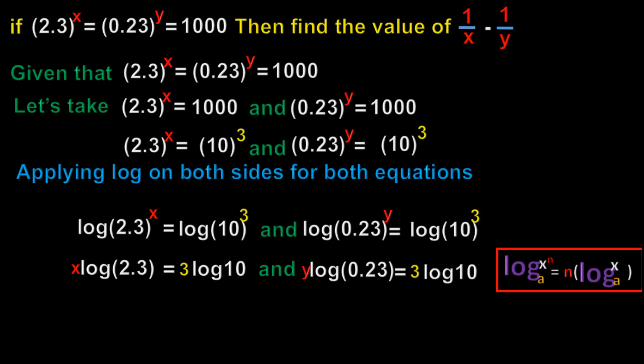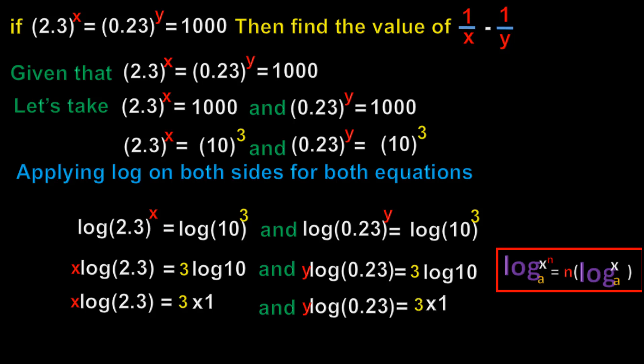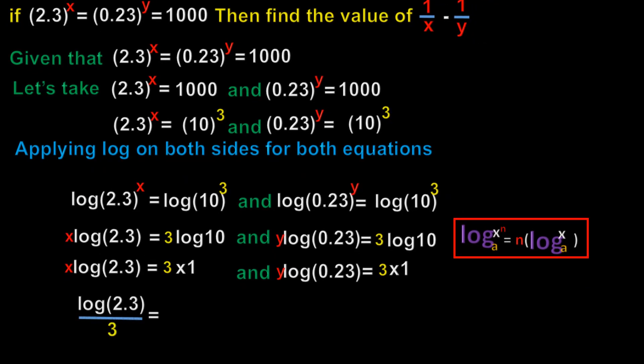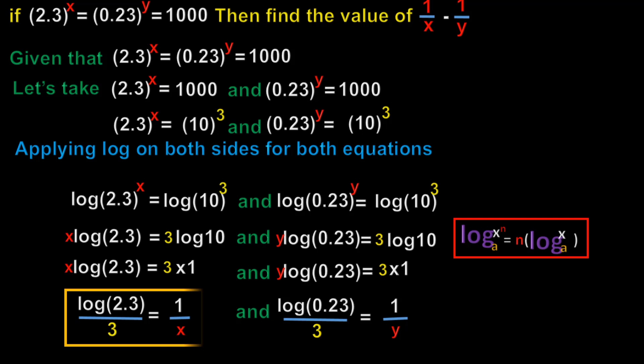Now on the right hand side of both equations we have log(10). Here the base of this logarithm is 10, since it is the common logarithm. So log(10) to base 10 equals 1. Therefore we can write x·log(2.3) = 3×1, and in the second equation y·log(0.23) = 3×1. Now transposing 3 to the left and x to the right, we get log(2.3)/3 = 1/x. Similarly for the second equation we get log(0.23)/3 = 1/y.